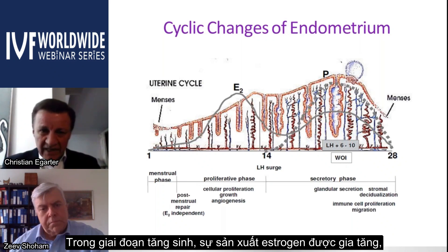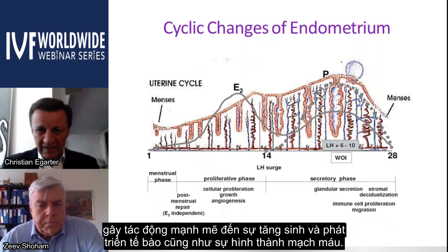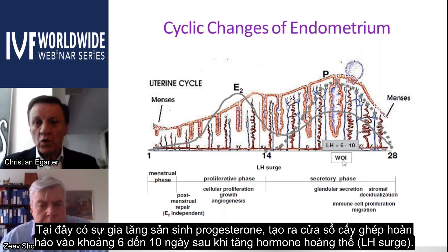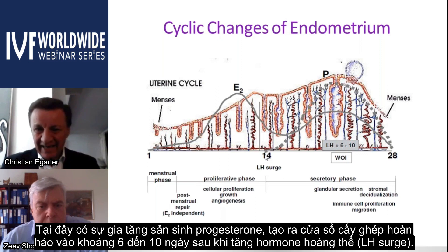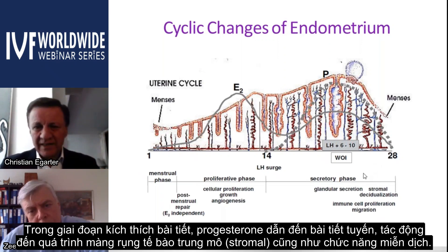During a normal cycle there is significant change in the endometrium. In the proliferative phase, increased estrogen drives cellular proliferation, growth, and angiogenesis. Then the LH surge occurs, followed by increased progesterone production, creating the window of implantation approximately six to ten days after the initial LH surge. Progesterone during the secretory phase leads to glandular secretion, stromal decidualization, and immunologic effects.